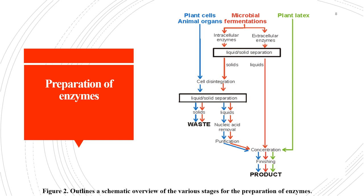Enzymes can be produced extracellularly or intracellularly by the microbe, or are released from cells and tissues into solution. The figure shown here outlines the various stages for obtaining an enzyme preparation after being produced. Post microbial fermentation as well as plant and animal tissue disintegration, the next and most important step is solid-liquid separation, which separates the cell mass from the broth or removes cell debris produced after cell lysis. The filtrate which contains soluble enzyme is collected either by filtration or centrifugation, and is further processed or purified to obtain the desired enzyme product.